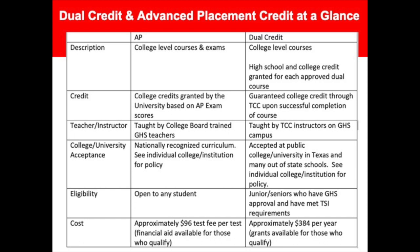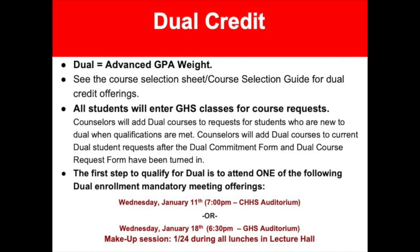Dual credit courses are also college level courses taught by TCC instructors who come to GHS. They teach junior and senior level English and social studies courses. Students that take dual credit earn the high school credit for the course as well as the college credit. The approximate cost is $384 per year. Juniors and seniors who have GHS approval and have met TSI requirements are eligible to take dual credit. Dual credit courses are advanced GPA weight. All students interested in taking a dual credit course will enter GHS classes in their course requests in Skyward. Once they have completed the steps to qualify for dual credit, their counselor will add the requested dual credit course to their course requests in Skyward.